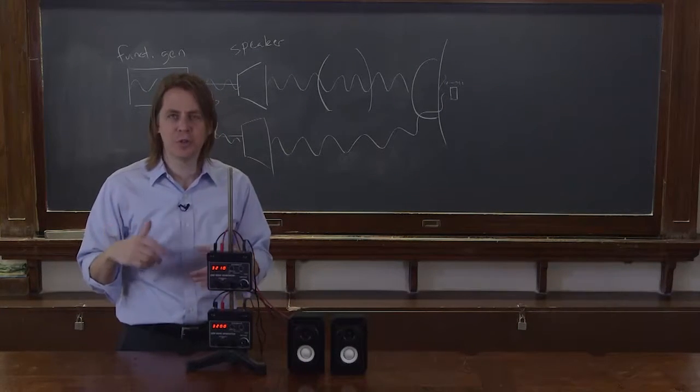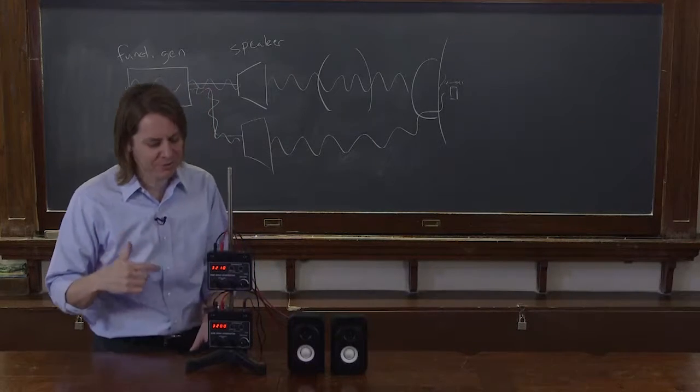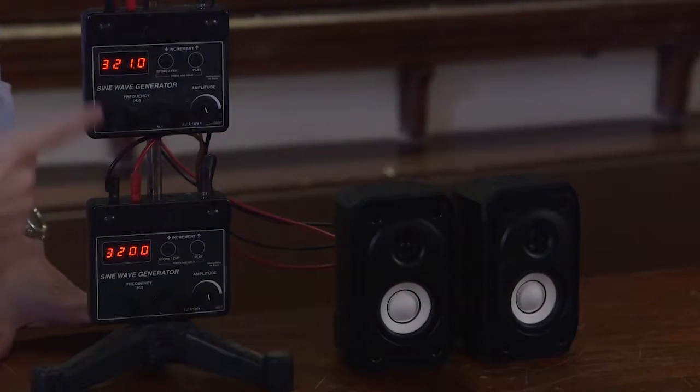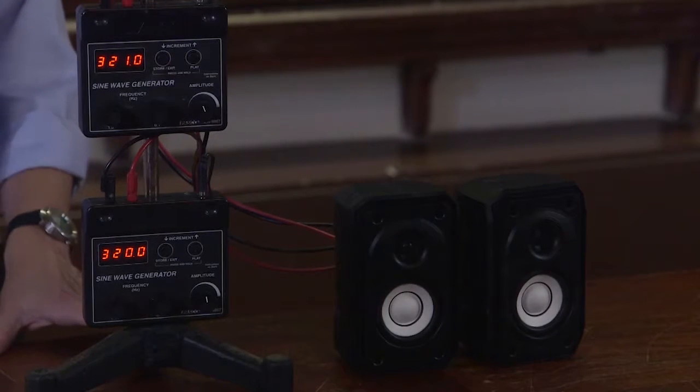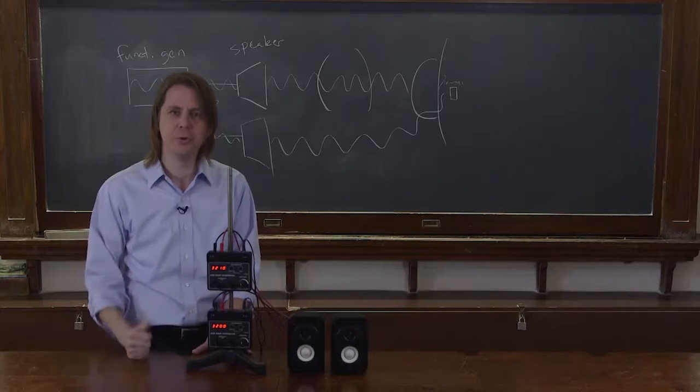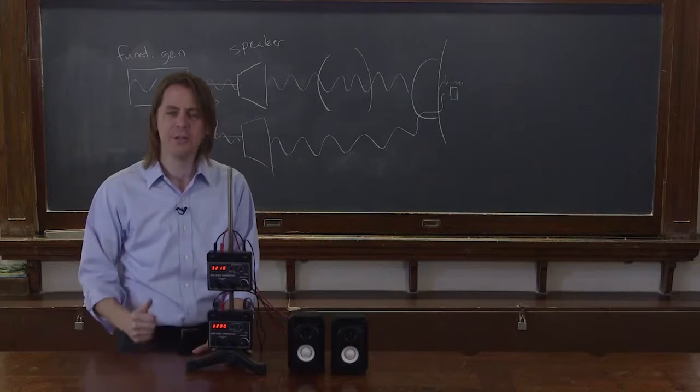The beat period should come out to be the difference in frequency. So here I have a difference of one hertz, 321 and 320. And you can hear it is at about one hertz. If you check it on your little YouTube clock, it's about one hertz.